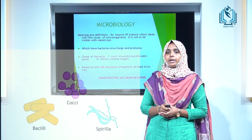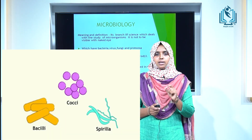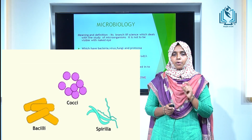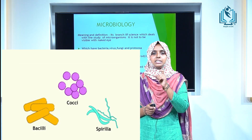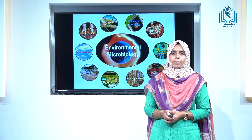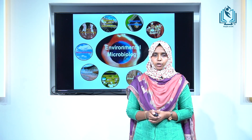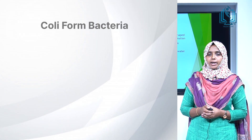Cocci is the round-shaped organism. Bacilli is the rod-shaped organism. Vibrio has a comma shape, and spirilla have a zig-zag shape. Environmental microbiology consists of soil microbiology, air microbiology, water microbiology, industrial microbiology, and various other parts of the science.